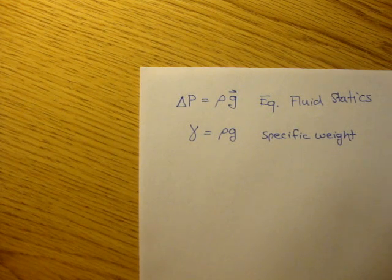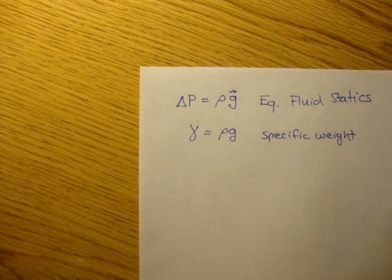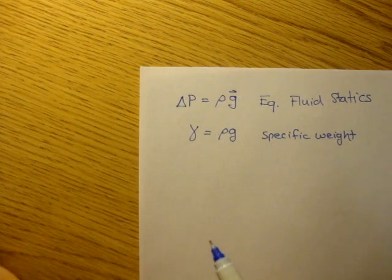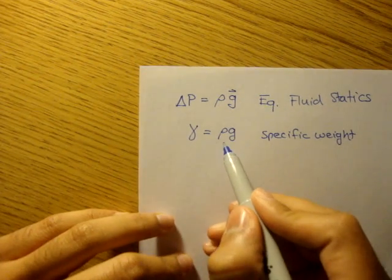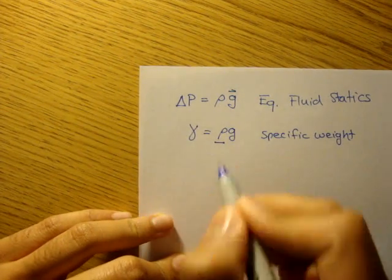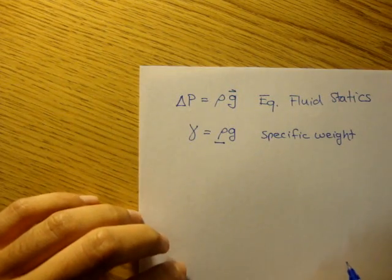And gamma, or the specific weight, is basically the weight per unit volume of the fluid. That's all, the weight per unit volume. And it's related by the density of the fluid we're studying.